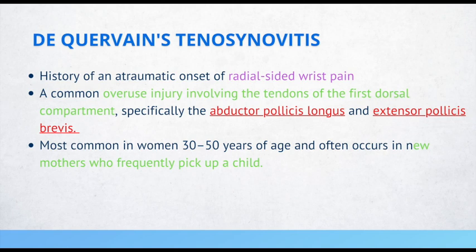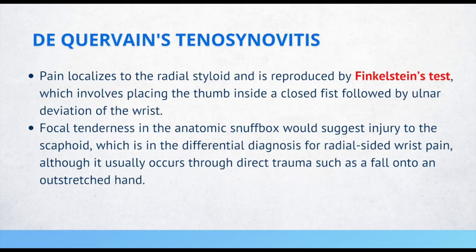Pain localizes to the radial styloid and can be reproduced by the Finkelstein's test, which involves placing the thumb inside a closed fist followed by ulnar deviation of the wrist. Focal tenderness in the anatomic snuffbox suggests injury to the scaphoid, which is in the differential for radial-sided wrist pain, although it usually occurs through direct trauma such as a fall onto an outstretched hand.